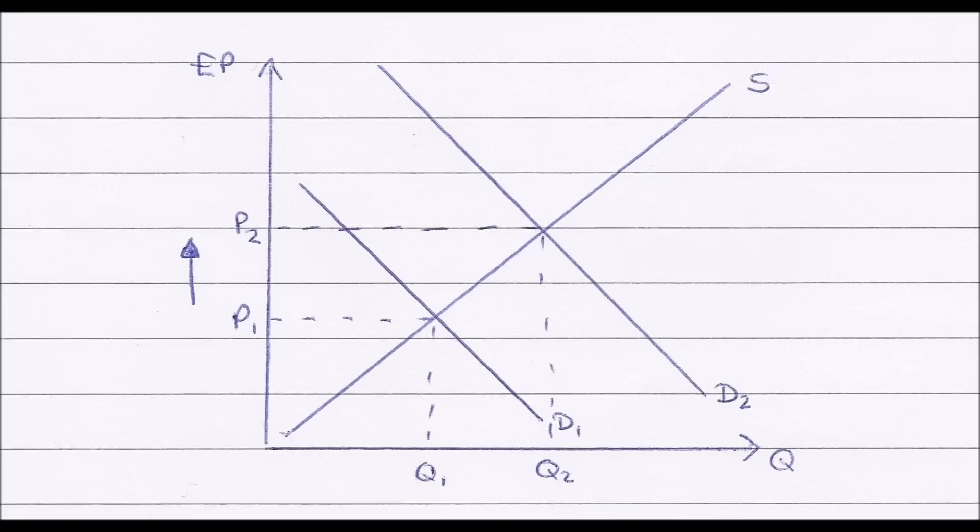So therefore the demand for the pound will increase. This is causing our demand curve for the pound to shift from D1 to D2. And this causes a shift in our equilibrium price from P1 to P2. So there has been a rise in our equilibrium price in the value of the pound. So therefore appreciation has occurred.